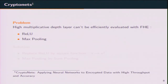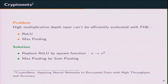As I said previously, low multiplicative depth layers can be efficiently computed with fully homomorphic encryption. A CNN has two nonlinear layers: the rectified linear function and the max pooling layers. A recent paper, CryptoNet, suggests replacing the rectified linear function with a nonlinear low-degree polynomial function — the natural solution being a square function — and replacing the max pooling layers with a sum pooling layer, which has null multiplicative depth.